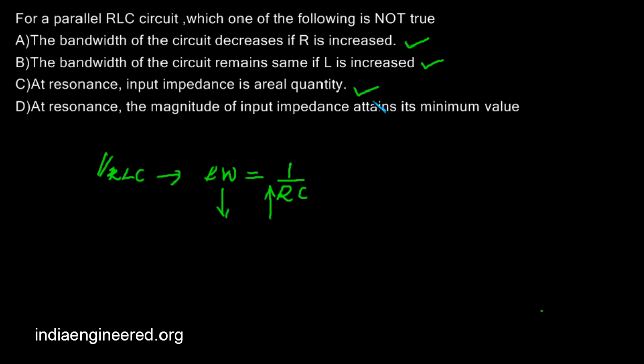Now the last question: at resonance, the magnitude of input impedance attains its minimum value. Now we are asked the case for a parallel RLC circuit. So for a parallel RLC circuit, the magnitude of input impedance attains its maximum value at resonance.